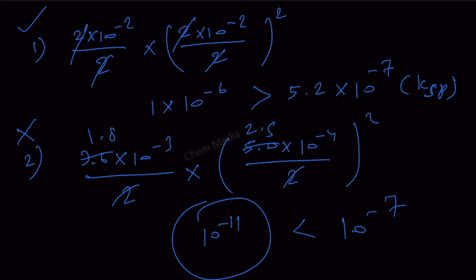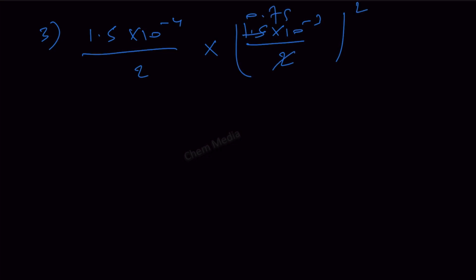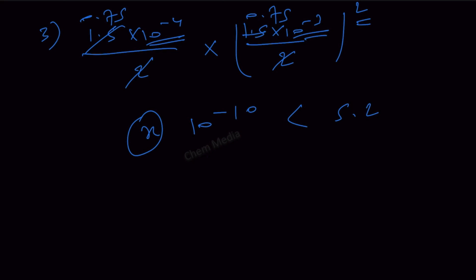For option 3: (1.5 × 10⁻⁴)/2 × [(1.5 × 10⁻³)/2]² = 0.75 × 10⁻⁴ × (0.75 × 10⁻³)² ≈ 10⁻¹⁰. Since 10⁻¹⁰ is less than 5.2 × 10⁻⁷, option 3 is also wrong — no precipitate forms.